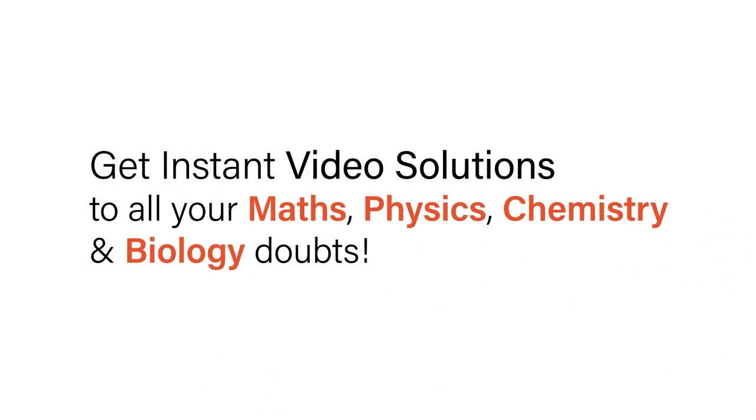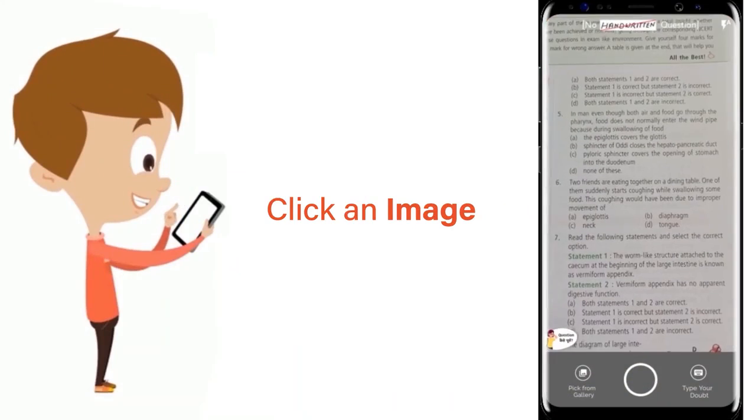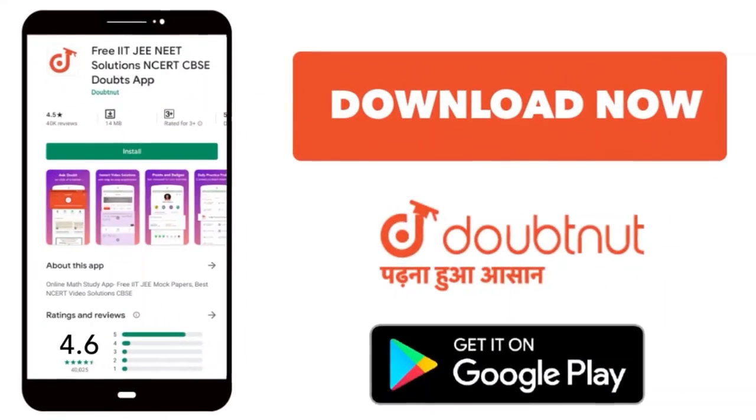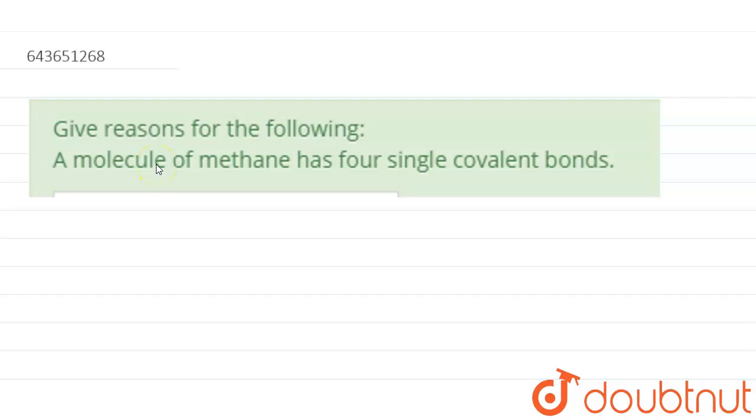With Doubtnet, get instant video solutions to all your maths, physics, chemistry and biology doubts. Just click the image of the question, crop the question and get instant video solution. The question is: give reason for the following - a molecule of methane has four single covalent bonds.